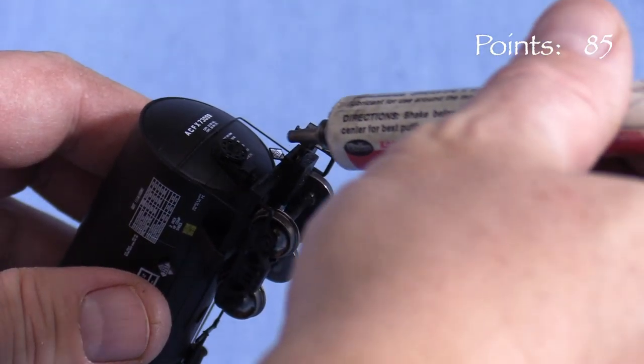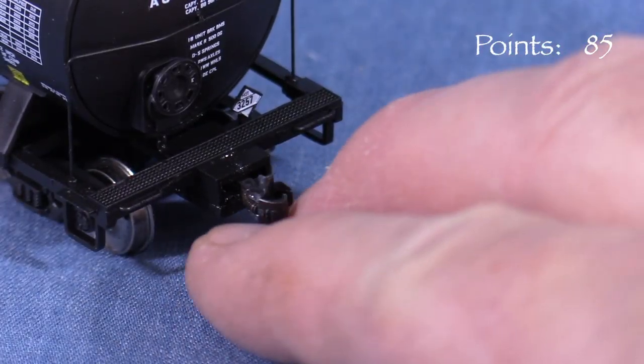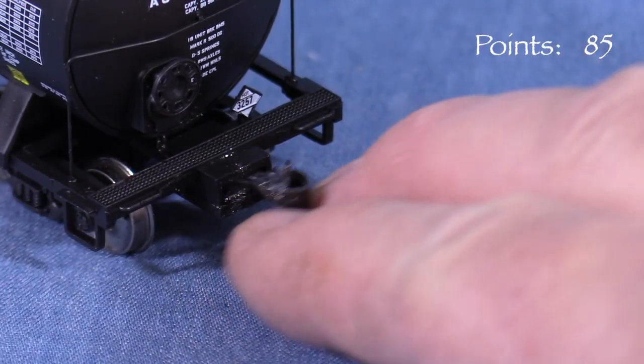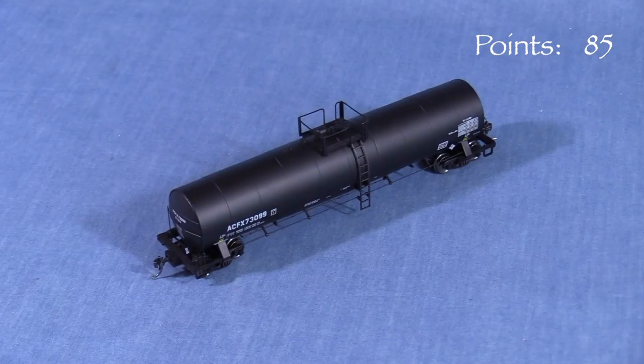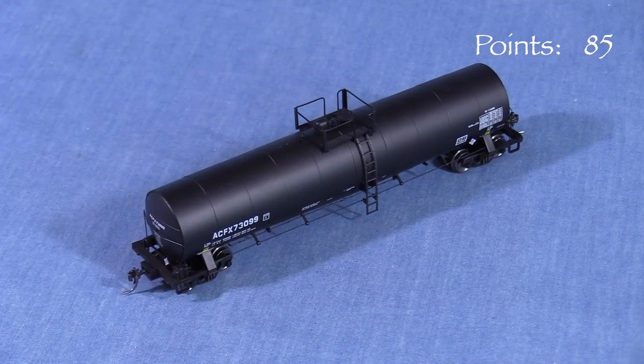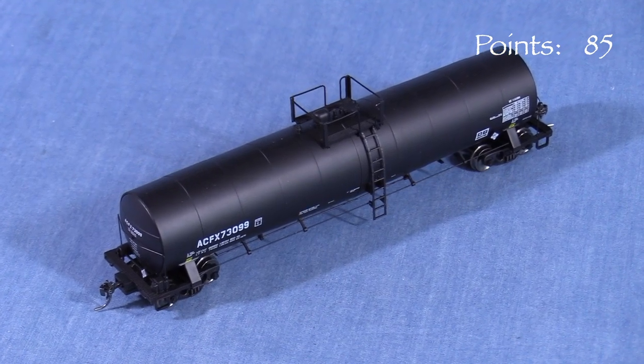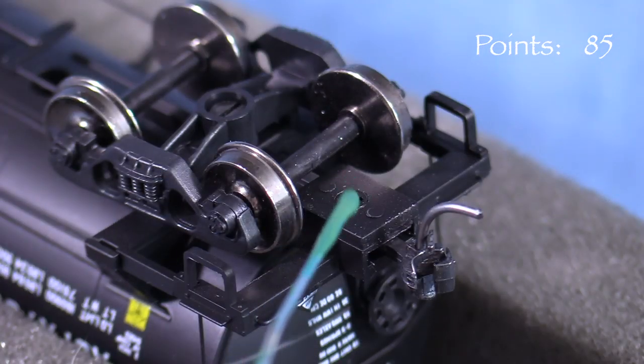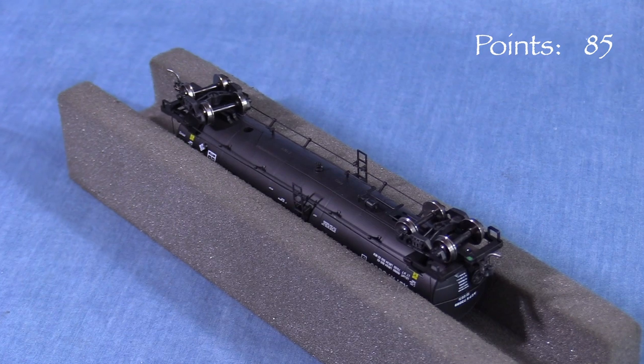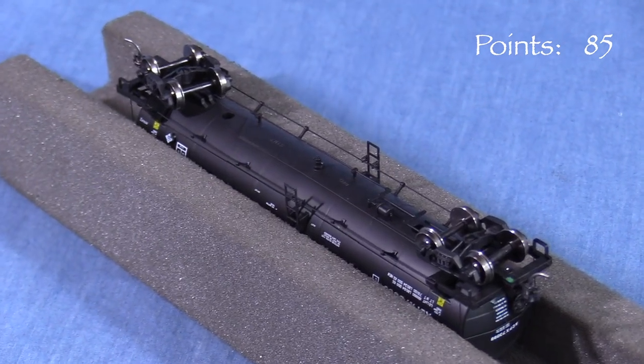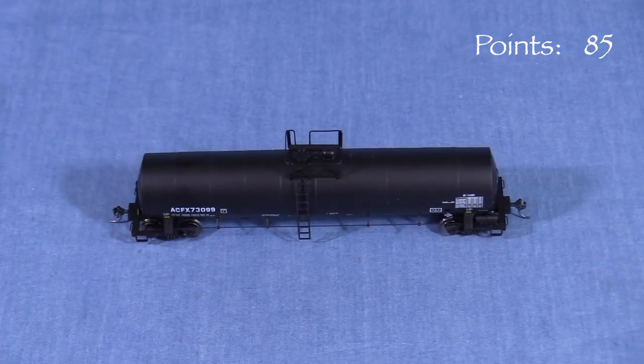After adding some of the graphite, I'll wiggle the couplers back and forth a few times to spread it around. Blowing on the couplers will scatter any excess powder. When I'm done with all the mechanical fixes on a piece of rolling stock, I put a dot of green paint somewhere on the bottom. That way later on I'll know that I've already worked on this car. This car is now ready to be weathered and put in service.